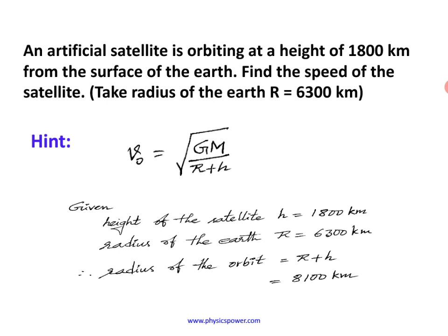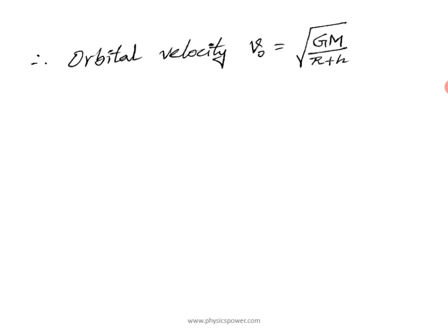G is the universal gravitational constant and M is the mass of the earth — generally we cannot remember those values. But we can simply remember small g, the acceleration due to gravity, which is just 10 m/s². So we can convert this formula in terms of small g.